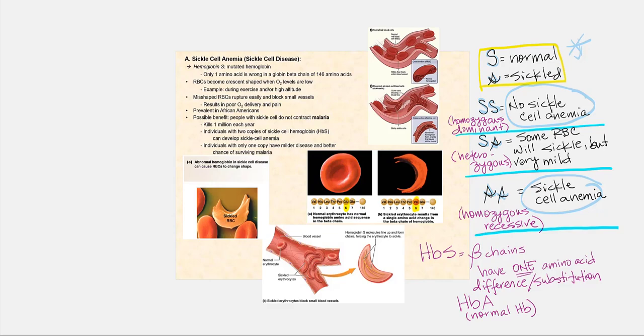It boils down to the beta chains. So we know that hemoglobin A has two beta chains and two alpha chains. With someone who has sickle cell anemia or is a heterozygote, the beta chains of their hemoglobin will have one amino acid difference or substitution from that of someone who has hemoglobin A, the normal adult hemoglobin. We can see this when we look at this image right here.